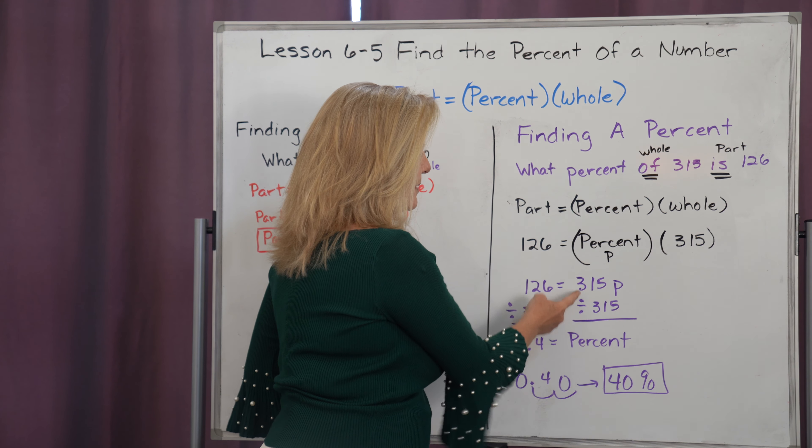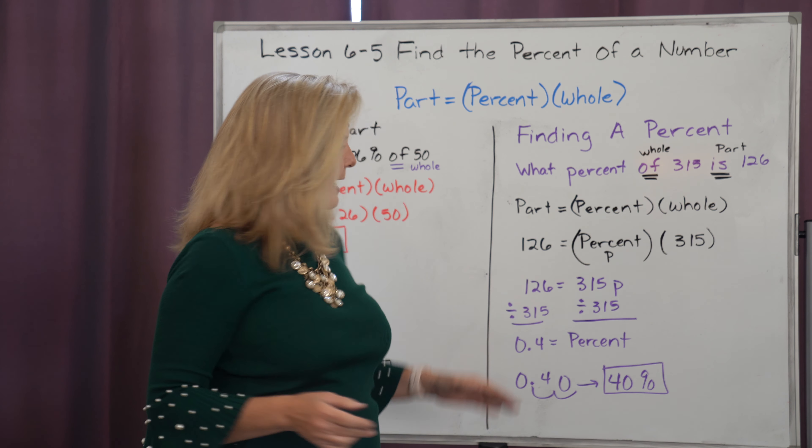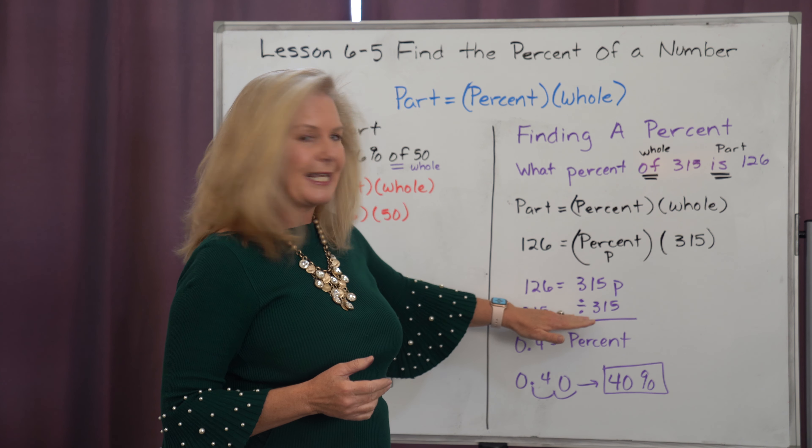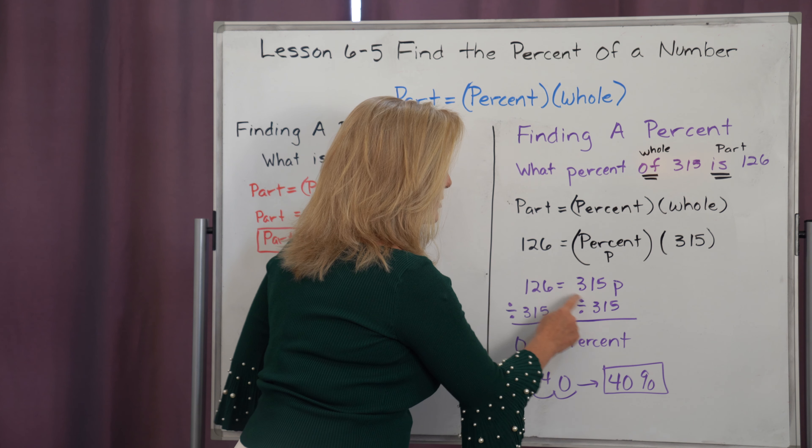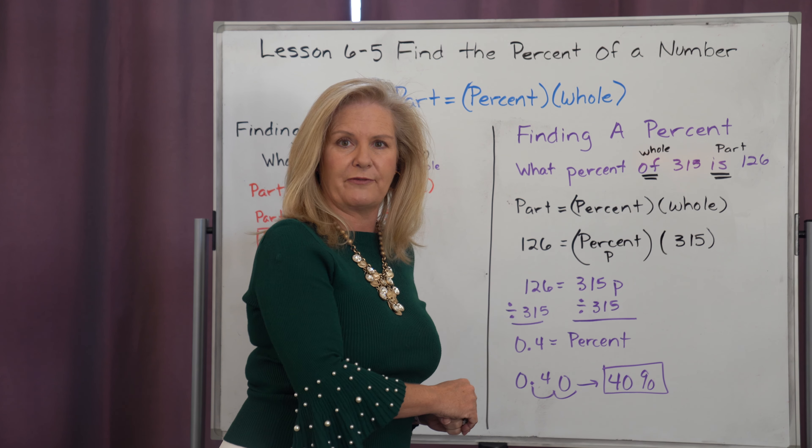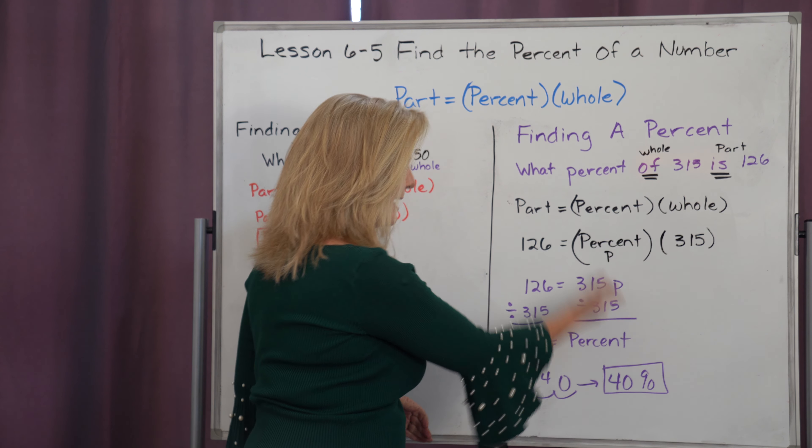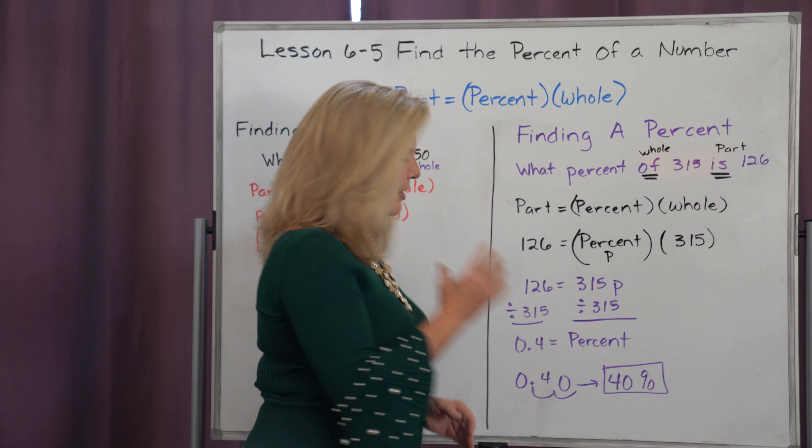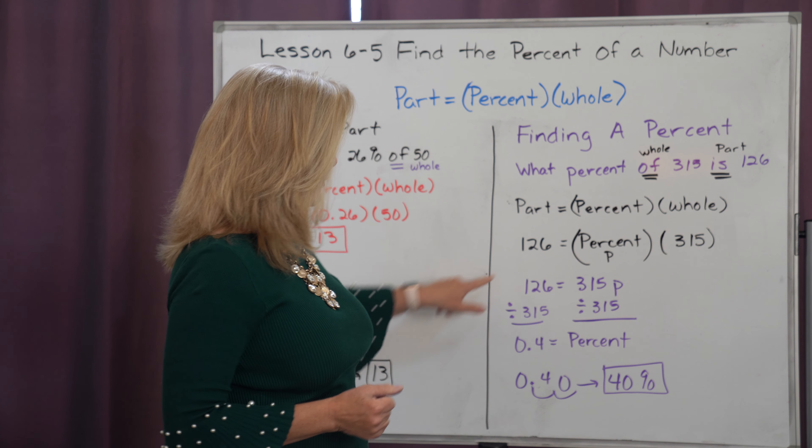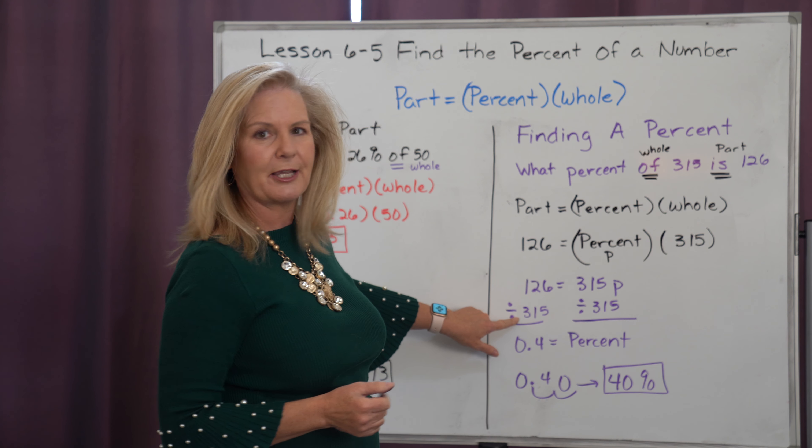So 315 times p is 315p. And I know that if I want to get that p by itself, I just need to divide out that 315. But whatever I do on one side, I need to do on the other. So it sets up this equation of 126 divided by 315.